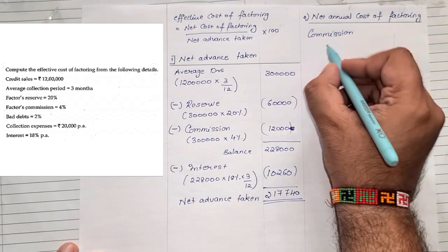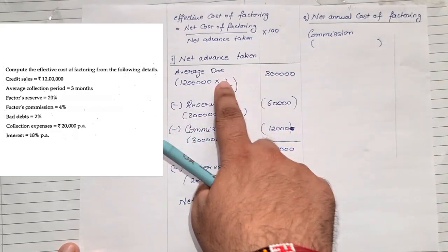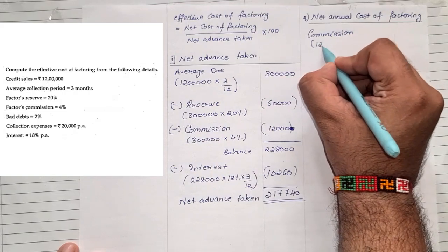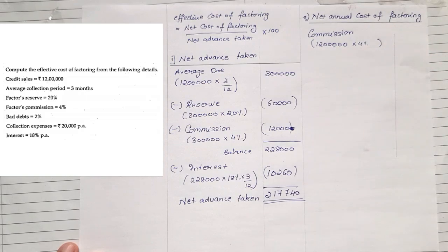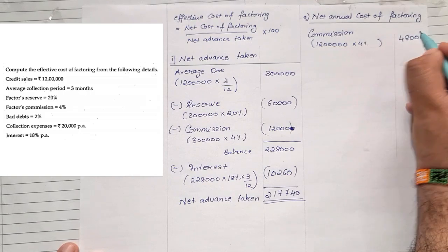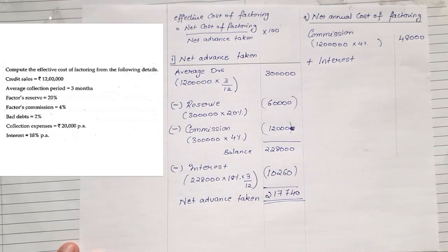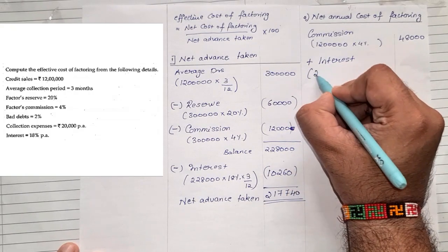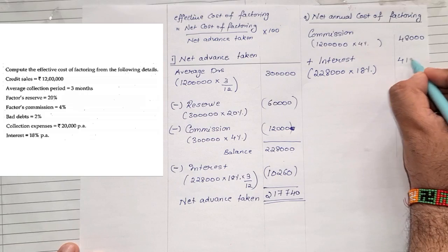The commission was 4%. For the year, we take commission on the full credit sales. Credit sales was 12 lakhs into 4%, which comes to 48,000. We then add annual interest. The annual interest will be on 2 lakhs 28,000 at 18% for the full year: 2 lakhs 28,000 into 18% equals 41,040.